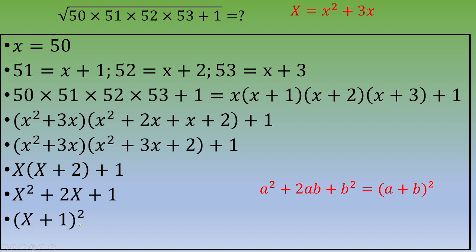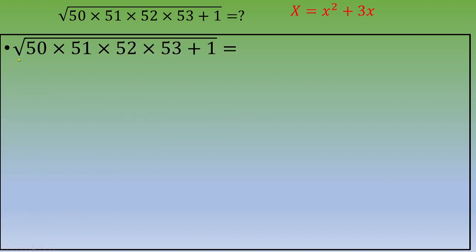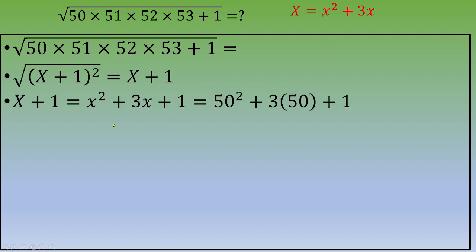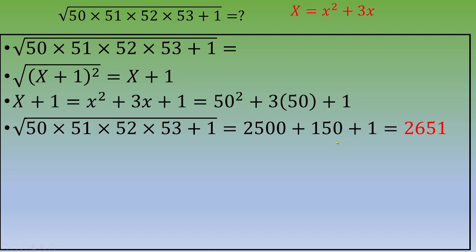To recap: the square root of 50 times 51 times 52 times 53 plus 1 equals the square root of (capital X plus 1) squared, which is simply capital X plus 1. We know capital X equals x squared plus 3x, and we set x equal to 50 at the beginning. So capital X plus 1 equals 50 squared plus 3 times 50 plus 1, which equals 2500 plus 150 plus 1, giving 2651.